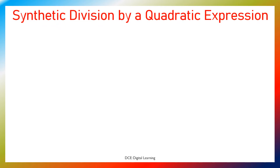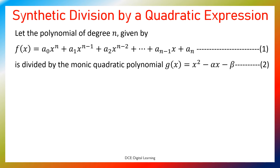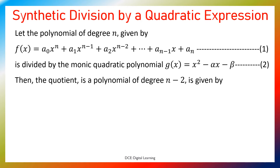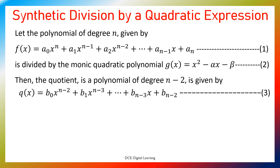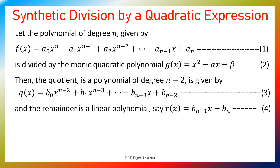Synthetic Division by a Quadratic Expression. Let the polynomial of degree n be given by f(x) equals a0 x to the n plus a1 x to the n-1 plus a2 x to the n-2 plus and so on plus a(n-1) x plus an — equation 1. This is divided by the monic quadratic polynomial g(x) equals x squared minus alpha·x minus beta — equation 2. Then the quotient is a polynomial of degree n minus 2 given by q(x) equals b0 x to the n-2 plus b1 x to the n-3 plus and so on plus b(n-3) x plus b(n-2) — equation 3. The remainder is a linear polynomial r(x) equals b(n-1) x plus bn — equation 4.